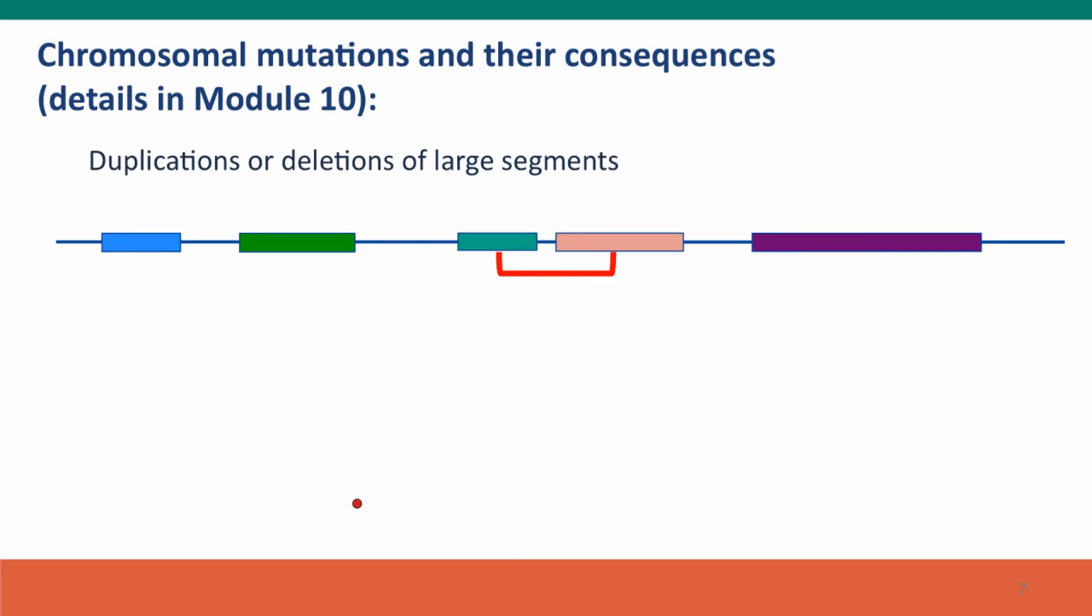Now, let's switch to thinking about chromosome mutations. We'll just cover these very briefly, because we'll do them in a lot of detail in Module 10. The first kind to think about is duplications or deletions of large segments. We talked about very short duplications and deletions, but larger deletions can have quite dramatic effects.